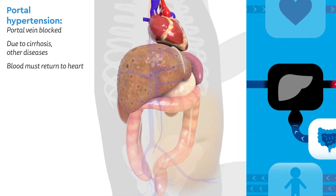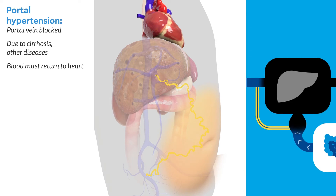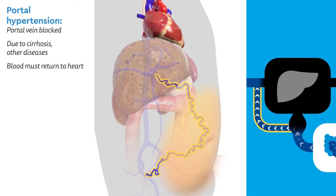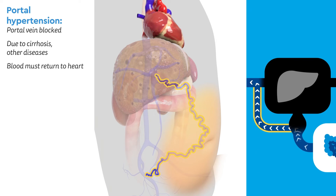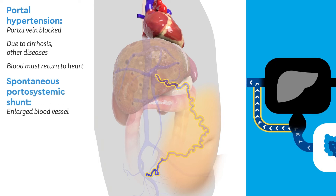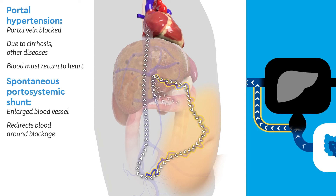If a blood vessel, even a small one, has a route back to the heart, the body makes it larger and larger to handle more and more blood. This enlarged blood vessel is called a spontaneous portosystemic shunt, because the body uses the vessel to shunt, or redirect, blood around the blockage and back towards the heart.